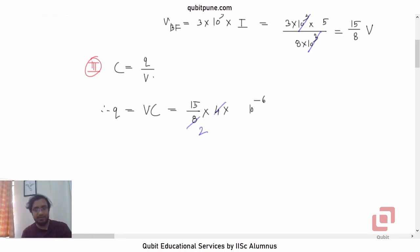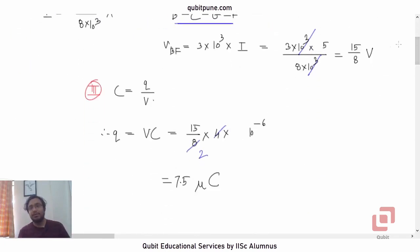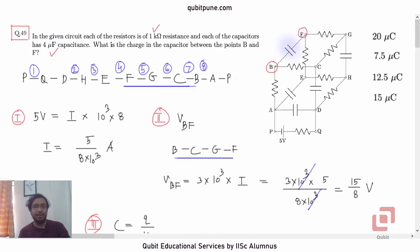Now this will be 7.5. 15 by 2 is 7.5. So it will be 7.5 microcoulomb. So this C is the unit coulomb and this C is the capacitance. So the charge on either of the plates of that capacitor which is there in B and F will be 7.5 microcoulomb. That is option B.